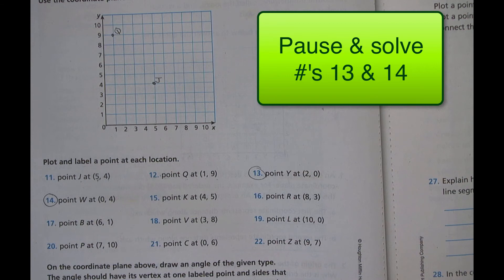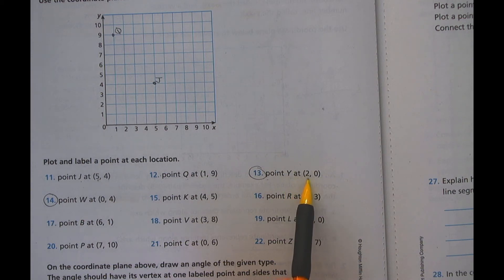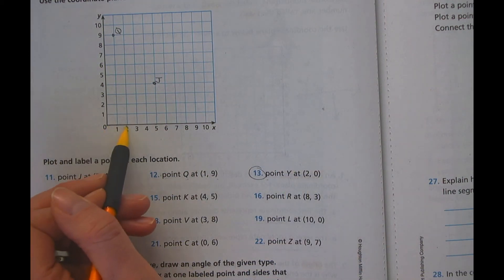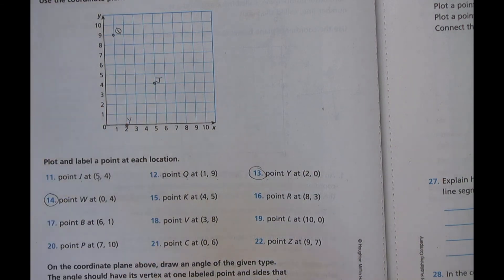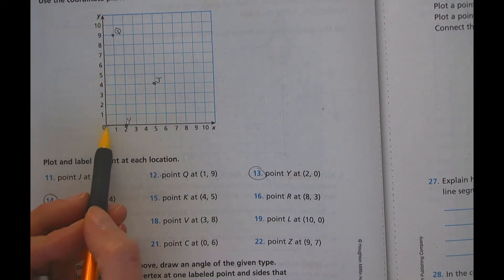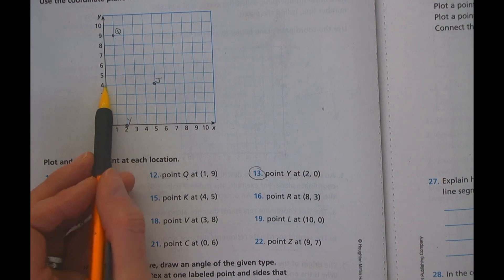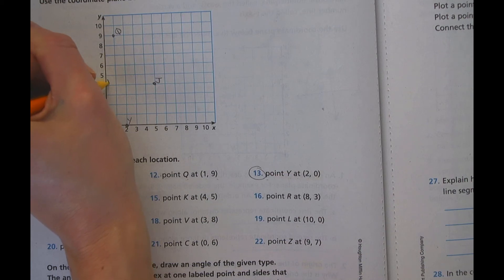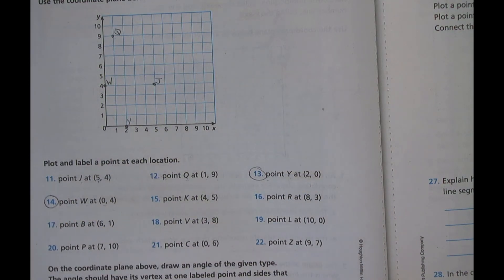So looking here at point Y, we are going to go across starting here at two. And this one is another interesting one because we don't go up. It just stays at zero. So our point Y should actually be right here. Then if you look here for W, it's sort of the opposite. Just like before when we did the sample on the page before, we don't go anywhere for zero. So this is our zero mark. And now we're just going to go up for Y, up to four. So your point W should have ended up right there. So sort of nice to make sure you're doing the zeros. Sometimes that can be confusing.